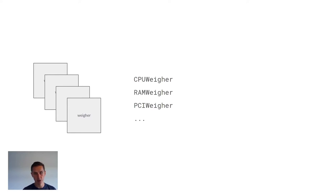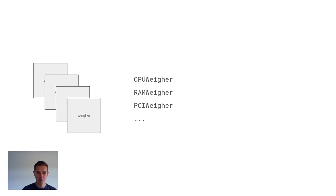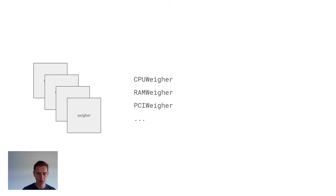Nonetheless, there are three weighers that do have some implications: the CPU weigher, the RAM weigher, and the PCI weigher. The CPU weigher helps you either stack or spread on hosts depending on availability of CPUs. The RAM weigher does the same for RAM. The PCI weigher, as you'd suspect, is for PCI devices. These can behave sometimes funkily depending on how your LibVirt driver is configured, and we'll cover each of these topics individually in a moment.